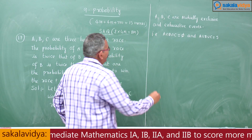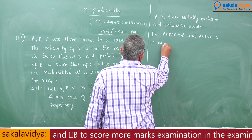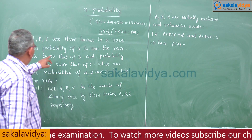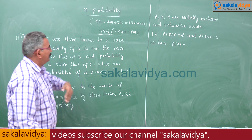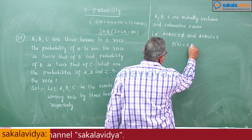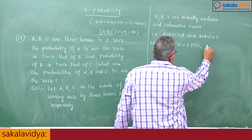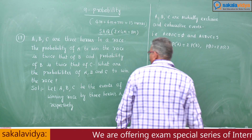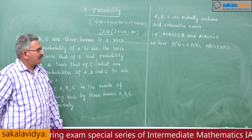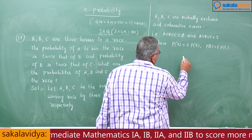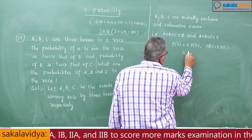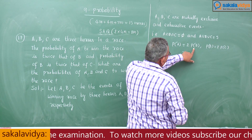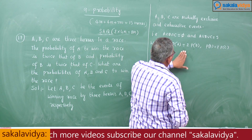According to the problem: probability of A to win the race is twice the probability of B. That is, P(A) = 2 × P(B). Whereas P(B) = 2 × P(C). Therefore P(A) also becomes 4 × P(C), since P(B) = 2P(C) gives P(A) = 2P(B) = 4P(C).